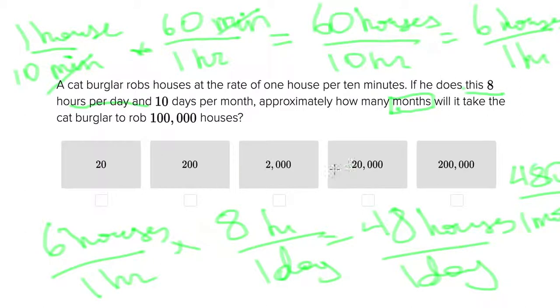But then we look at our answer choices. We know that we're trying to figure out how many months it will take to rob 100,000 houses. But you can't really multiply 480 by any of these numbers and get 100,000 houses. What is important about the question is that we're looking for an approximate number.